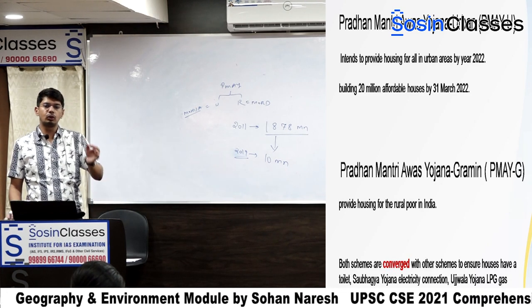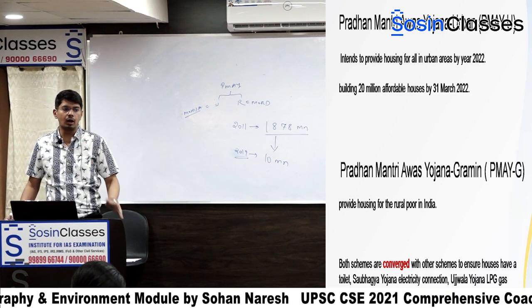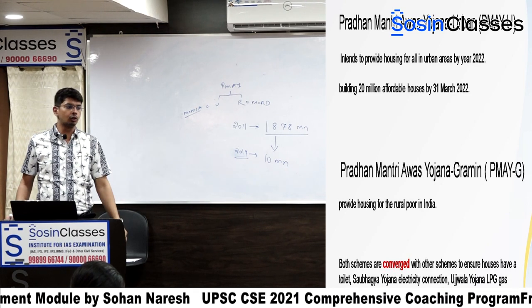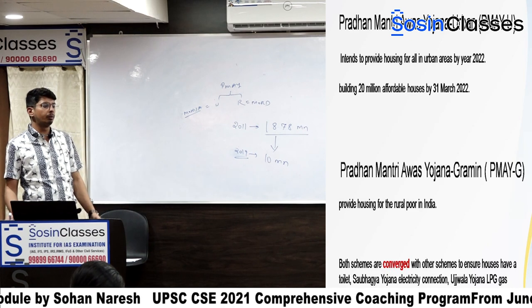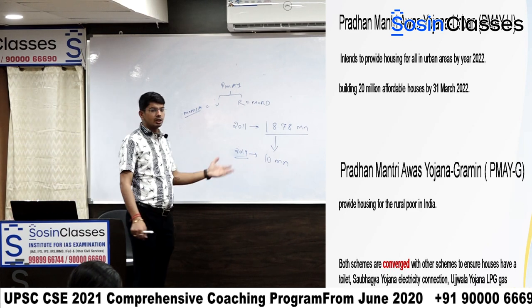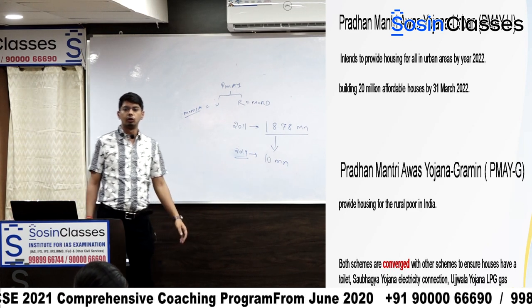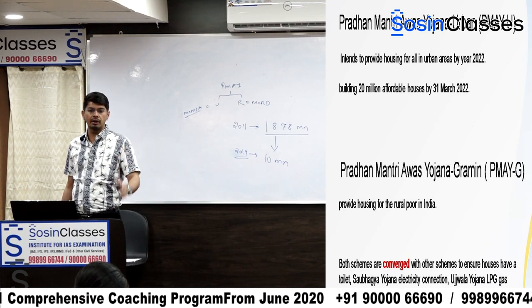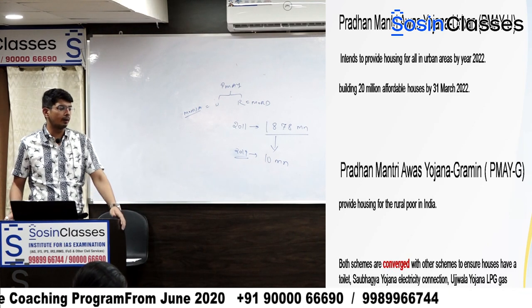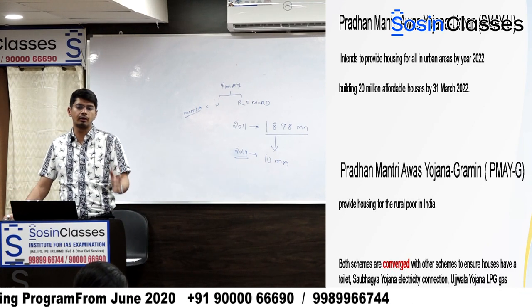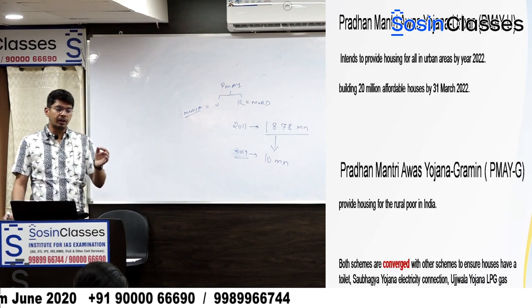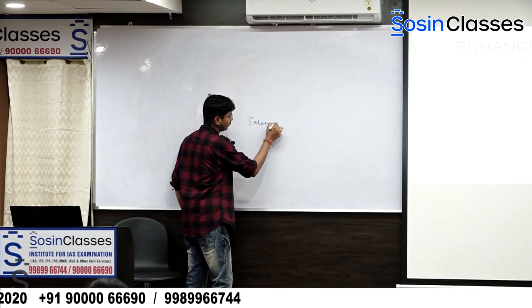It means once you are building the house, you will be getting electricity, you will be getting water, you will be getting sanitation facility, you will be getting LPG connection, and you will be approached for banking facility under Jan Dhan Yojana. That is called convergence. So it is one of the measures for good governance.